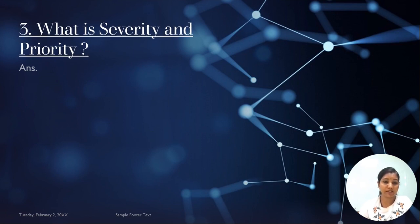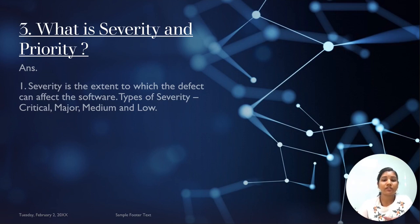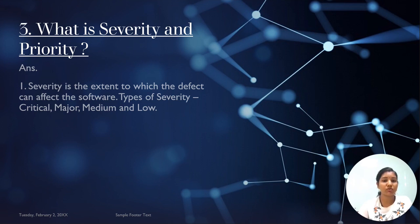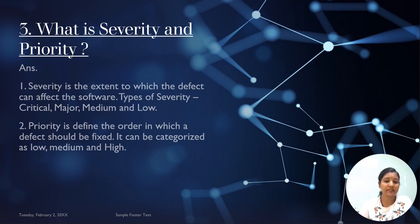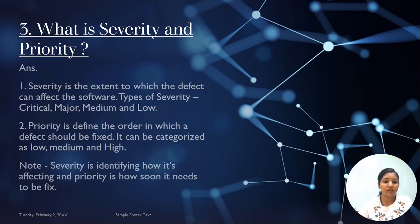Next: what is severity and what is priority? Severity is the extent to which a defect can affect the software — we check severity from the business level, how it is impacting our application. Types of severity include critical, major, medium, and low. Priority defines the order in which a defect should be fixed — how soon we have to fix it. Priority can be categorized into low, medium, and high. Severity identifies how a defect is impacting the system, while priority determines how soon it needs to be fixed. Priority is set by the developer and severity is set by the business.